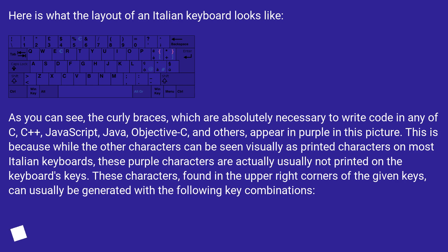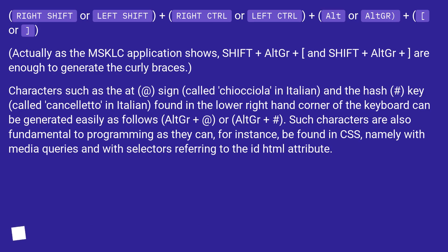While the other characters can be seen visually as printed characters on most Italian keyboards, these purple characters are usually not printed on the keyboard's keys. These characters, found in the upper right corners of the given keys, can usually be generated with key combinations. As the MSKLC application shows, Shift plus AltGr and Shift plus AltGr are enough to generate the curly braces.